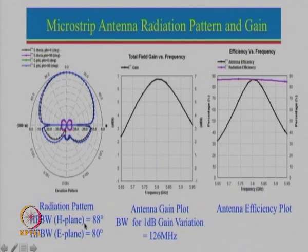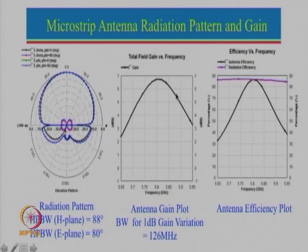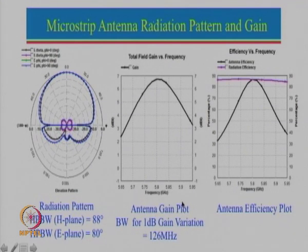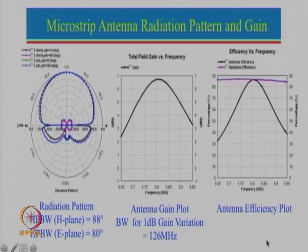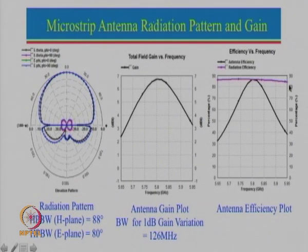The front-to-back ratio is fairly good. The half power beam width in the H-plane is about 88 degrees and in the E-plane is about 80 degrees. This is the gain plot — the maximum gain is slightly less than 7 dB, and as frequency changes, gain varies. Generally a 1 dB gain variation is acceptable, so the bandwidth for 1 dB gain variation is approximately 126 MHz. These are the plots for antenna efficiency: this plot corresponds to radiation efficiency and one can see that these antennas are fairly good radiators.